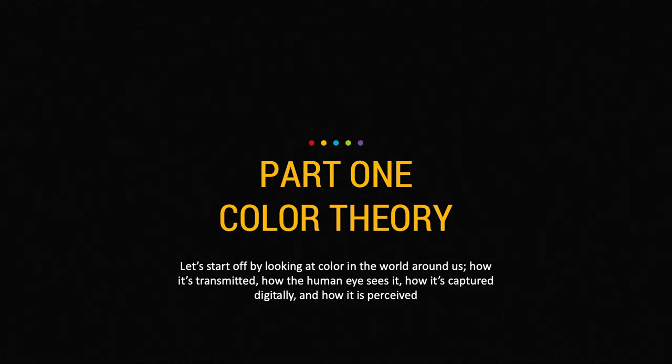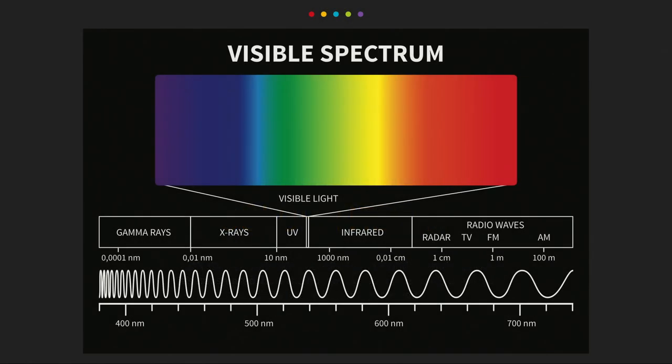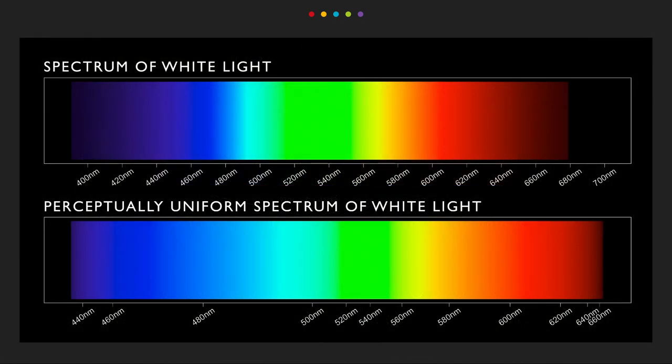Part one: color theory. Let's start off by looking at color in the world around us — how it is transmitted, how the human eye sees it, how it's captured digitally, and ultimately how it is perceived. Our exploration starts with the radiation waves that surround us on a daily basis, all the way from gamma rays at their incredibly short 10,000th of a nanometer wavelength, to AM radio waves at their relatively long 100-meter wavelength. In the middle of this spectrum lies the visible spectrum of light.